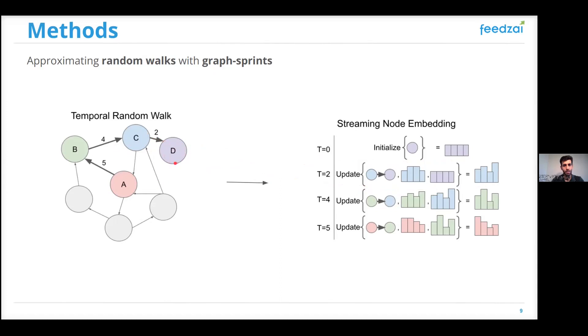similarly, to obtain an embedding of node B, we will use the features of the edge and the latest embedding of node C to generate an embedding of node B. Notice that now to generate an embedding of node B, we didn't need to perform the walk and visit node D anymore because the embedding of C already has information about D.